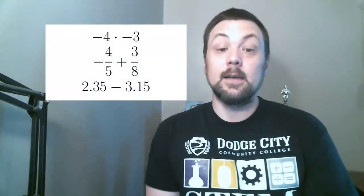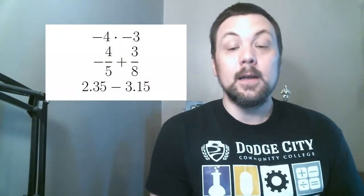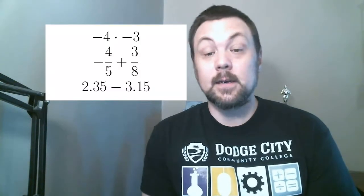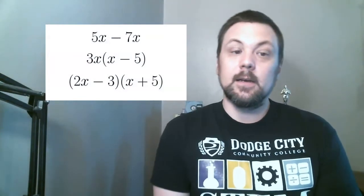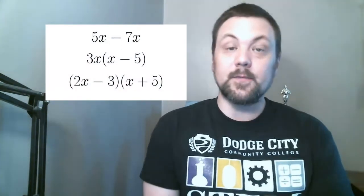Before taking this class, it would be a good idea to review the following math topics: arithmetic with negative numbers, decimals, and fractions, such as -4 × -3, or -4/5 + 3/8, or 2.35 - 3.15; simplifying algebraic expressions by combining like terms, distributing, or FOIL, such as 5x - 7x, 3x(x - 5), or (2x - 3)(x + 5); understanding the difference between a term and a factor; and simplifying radicals, such as √25.